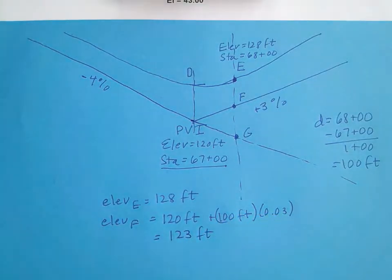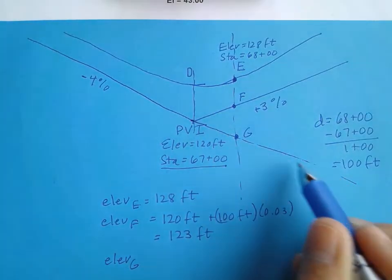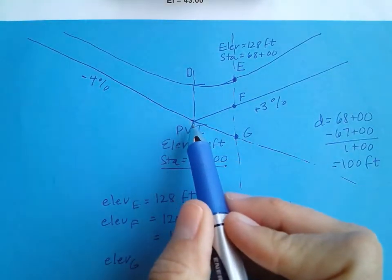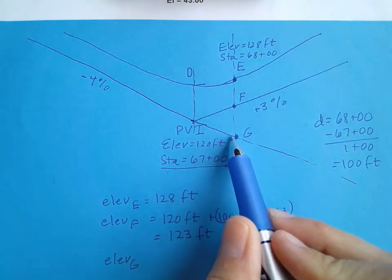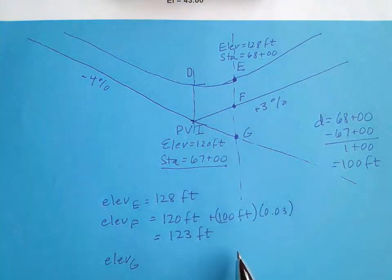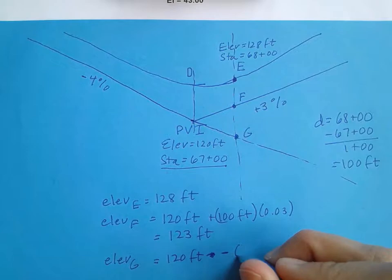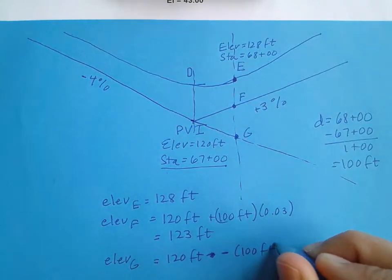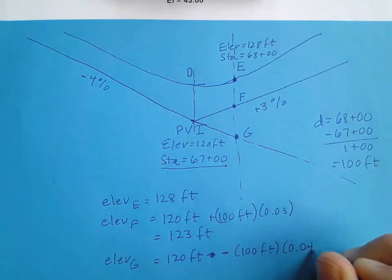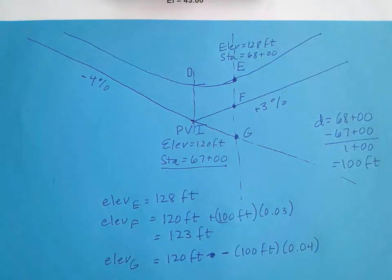Then I follow the same procedure to find the elevation at point G, which is along the extended minus 4% downgrade past the PVI. Starting at 120 feet and subtracting the 100-foot distance times the 0.04 downgrade gives an elevation at G of 116 feet.